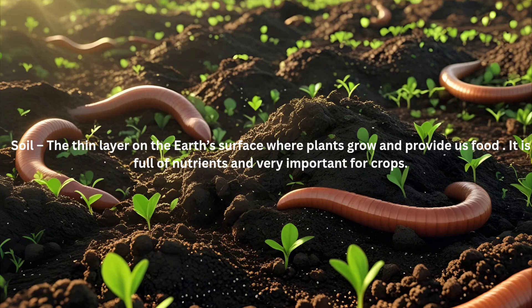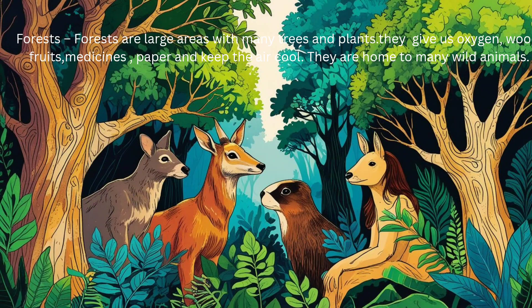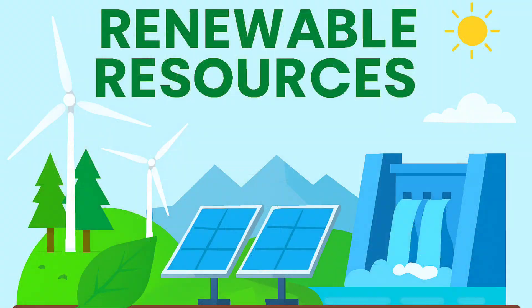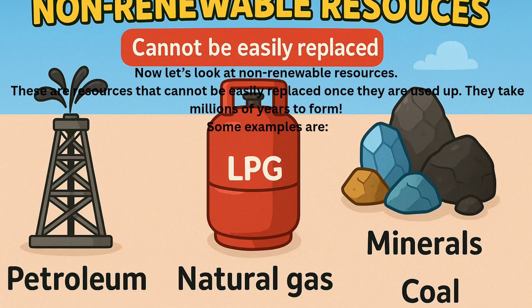Air: we breathe air to live, and plants and animals need it too. But remember, we must not pollute it. Soil is the thin layer on the earth's surface where plants grow — it is full of nutrients and very important for crops. Forests give us oxygen, wood, fruits, and keep the air cool. They are home to many wild animals. So children, renewable resources are like gifts of nature that keep coming back, but we must use them wisely.